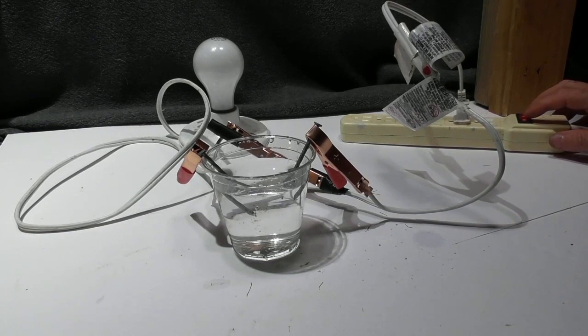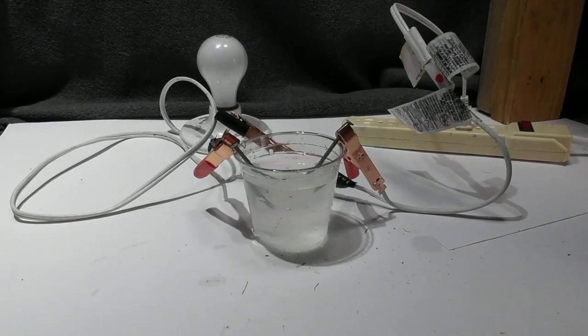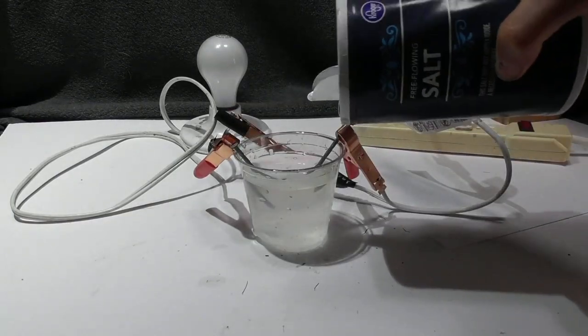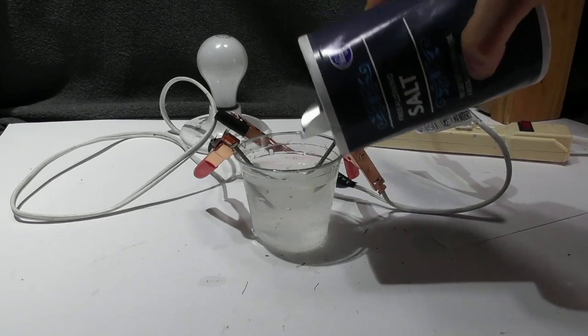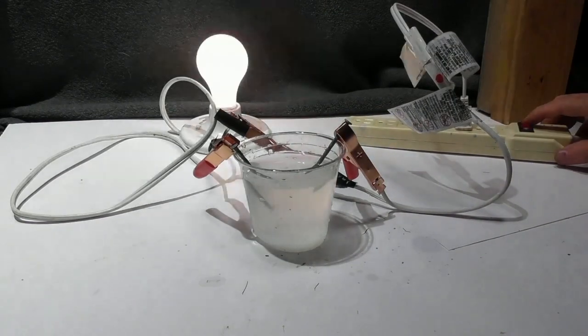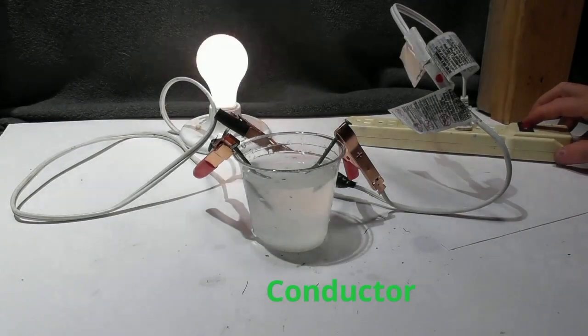Well, let's modify the water slightly. Let's add some salt. As I add the salt, I pour it in. I go back to the switch. What do you think? Is it going to change? I hit the switch. And yes, it is now a conductor. The salt allows the electrons to move freely.